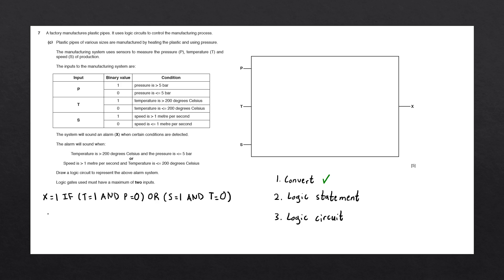Step number 2 is to write this out as a logic statement that we can turn into a logic circuit. All logic statements always start with the output first and an equal sign. So X equals 1 if converts into X equals. We then start with our statements. The rule is: whenever we have a letter is equal to 1, we simply write down that letter. Whenever we have a letter is equal to 0, we write down the NOT of that letter.